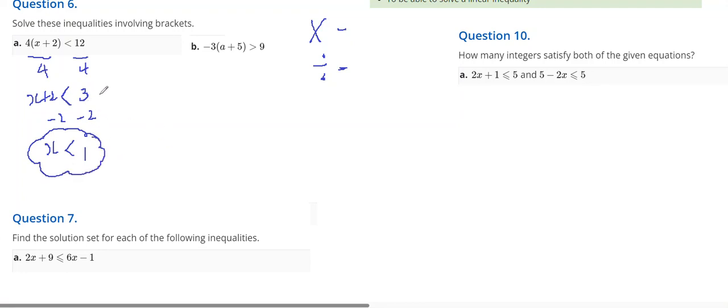Part B: 3 does go into 9, so I'm going to divide both sides by negative 3 to start off with, which means I need to change my inequality sign around. Negative 3 goes into 9 negative 3 times, and I've got a plus 5. Then minus 5 and minus 5. a is less than minus 8 is going to be my answer.